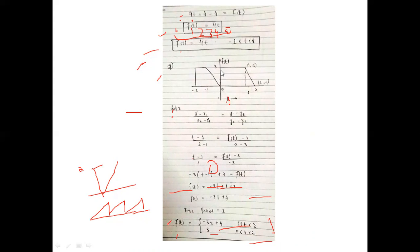Now we have a combination of a straight line and a slope. From zero to one the value is three — no need to apply the slope formula since the slope of a straight line is zero and constant throughout. From one to two, applying the two-point formula gives f(t) = −3t + 4. So the function is: three from zero to one, and minus 3t plus 4 from one to two.